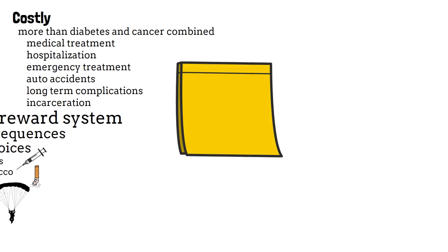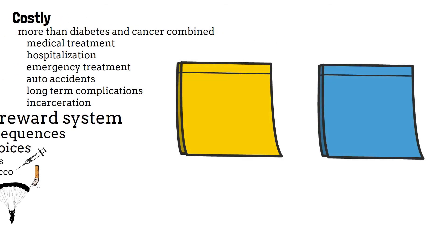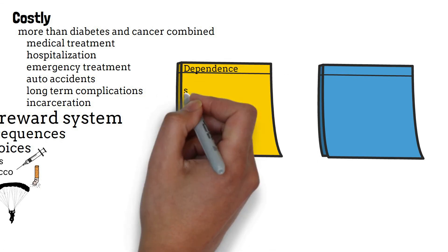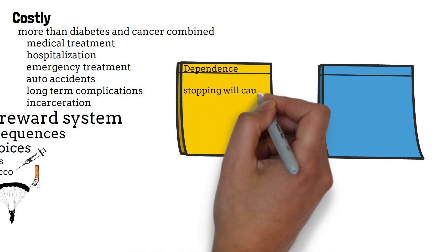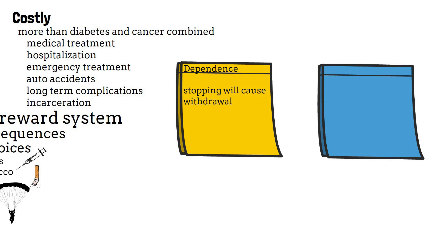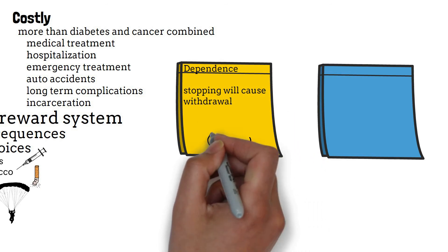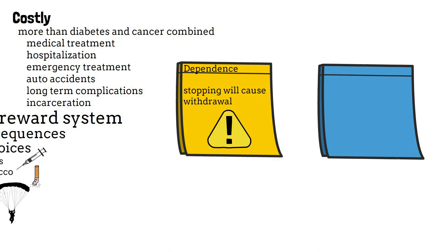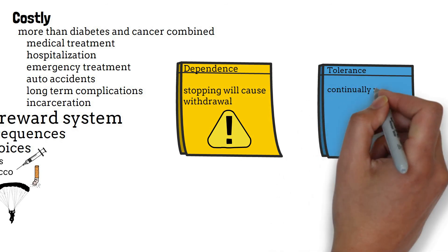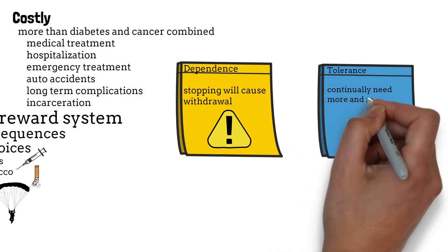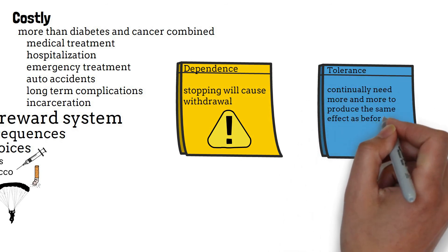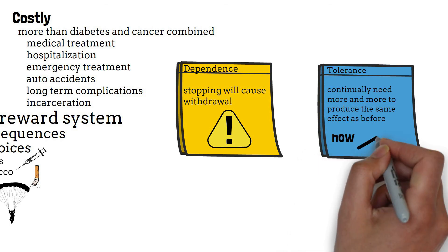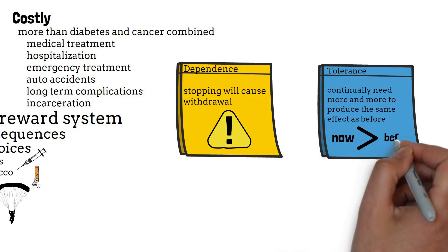Drug addiction can lead to dependence. When a person is dependent on a drug or alcohol, stopping the use of the drug will place the person into withdrawal, a state that is very unpleasant and possibly fatal. Tolerance develops when the person must take more of the drug to get the same effect that they used to get previously. The drug has a diminished effect after repeated use.